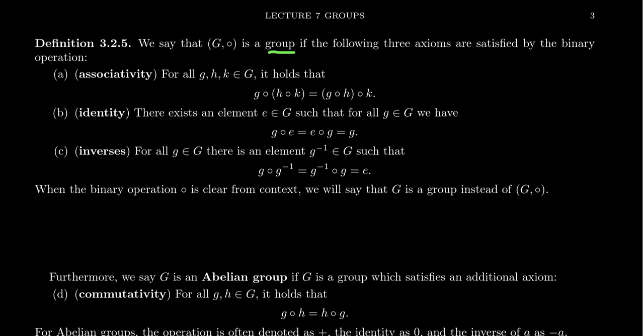The next axiom is the identity axiom. The identity axiom says that there exists a distinguished element in the group, which we often call E — coming from the German word for identity. For any element G in the group, operating G with E gives the same result whether E comes first or second, and that result is just G itself. When you operate by the identity element, nothing happens to the other element.